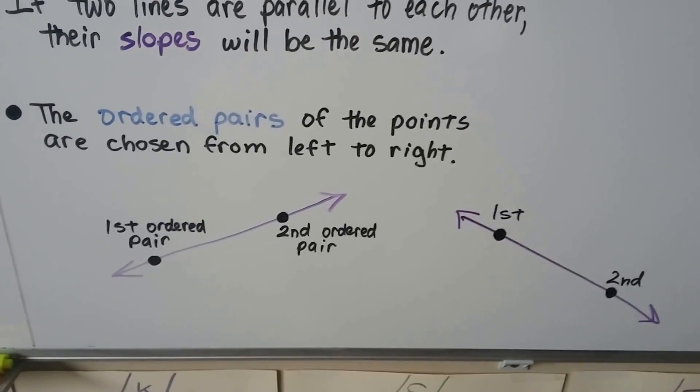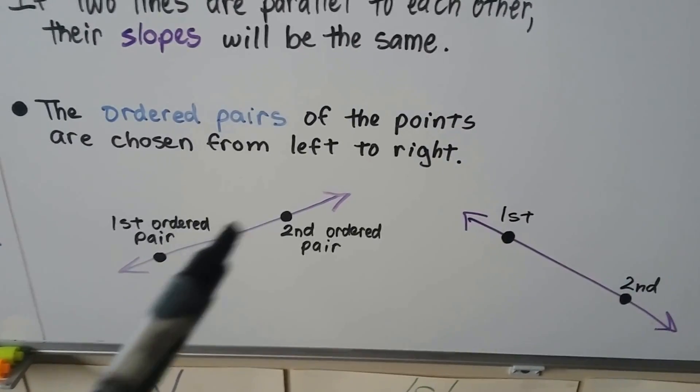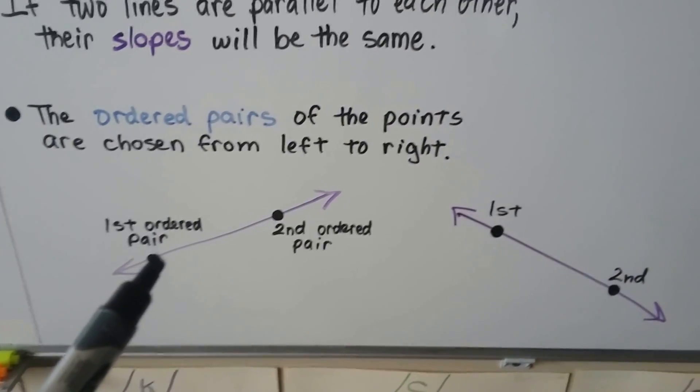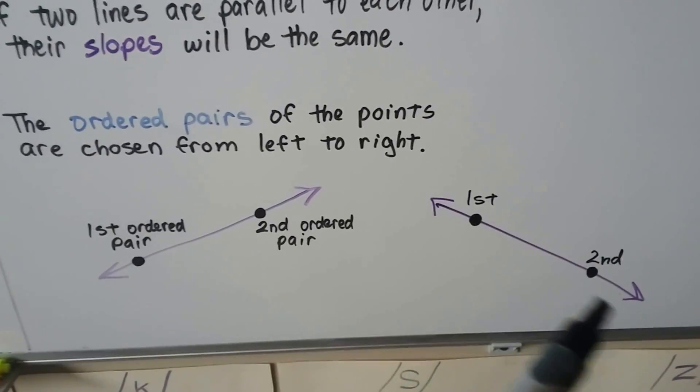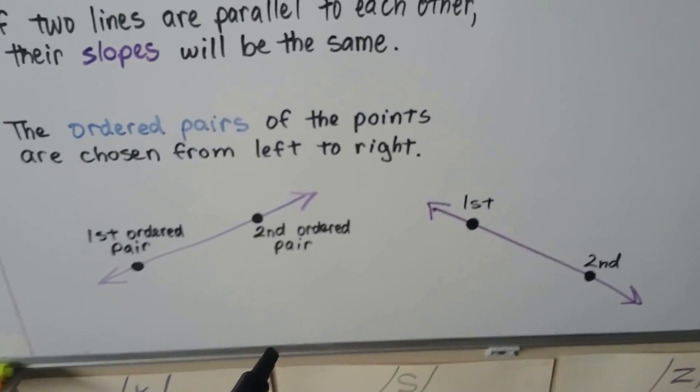And ordered pairs of the points are chosen from left to right. So if we have a line that's rising to the right, that's our first ordered pair, and that's our second ordered pair. If it's falling, then that's our first one, and that's our second one. So we go from left to right.